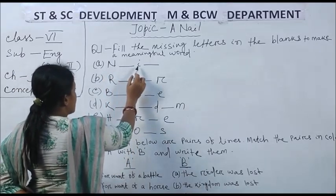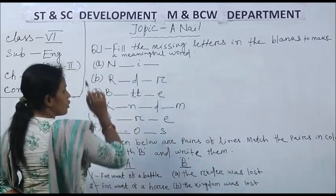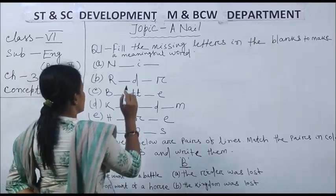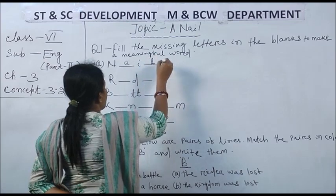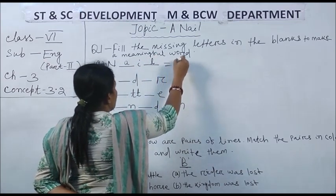Fill the missing letters in the blanks to make a meaningful word. N dash I dash, what will be the word? From the poem, N A I L. It will be nail.